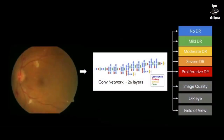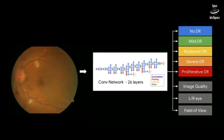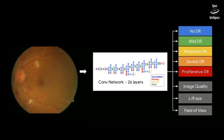With this labeled dataset, we put it through a fairly well-known convolutional neural net called Inception, which is generally used to classify cats and dogs in photo apps. We just repurposed it to do fundus images.